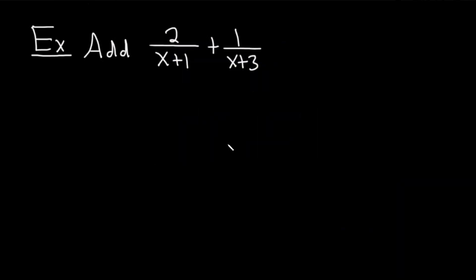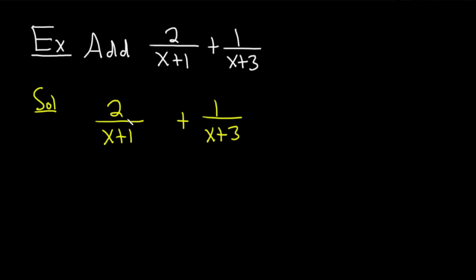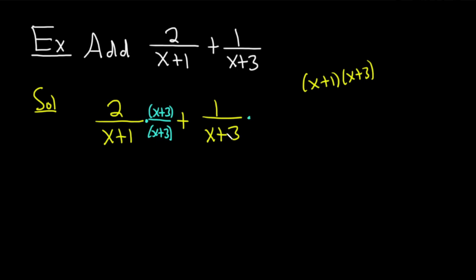In our last example, we're going to do some addition. We have 2 over x plus 1 plus 1 over x plus 3. In order to add these fractions, we have to have the same denominator. One way to do this is to use the common denominator equal to the product of the two denominators — that's the least common denominator here. You look at each fraction and ask what's missing. For the first fraction, you're missing x plus 3, so you multiply by x plus 3 over x plus 3. For the second fraction, you're missing x plus 1, so you multiply by x plus 1 over x plus 1 — essentially multiplying by 1.